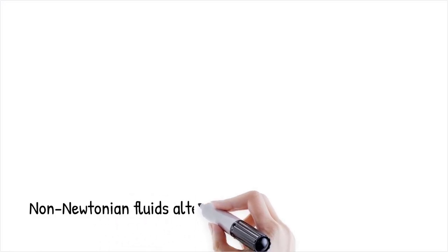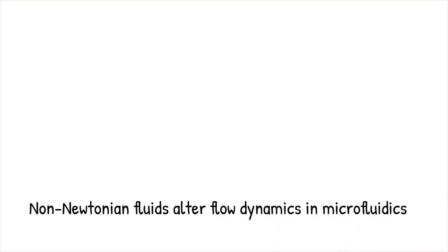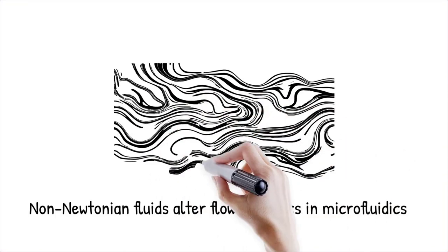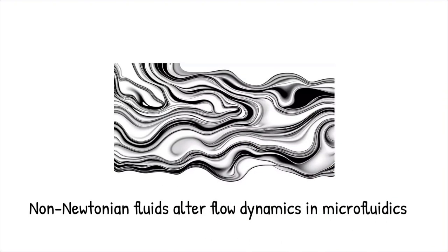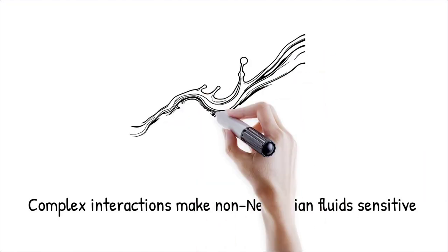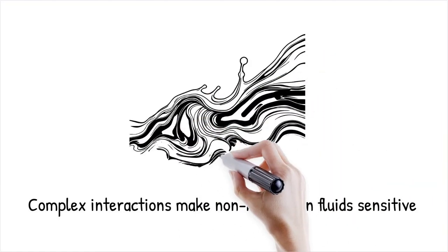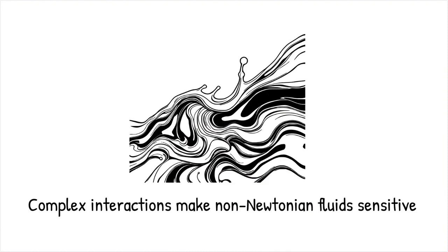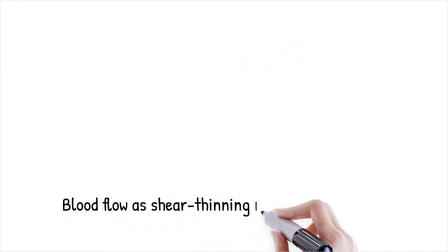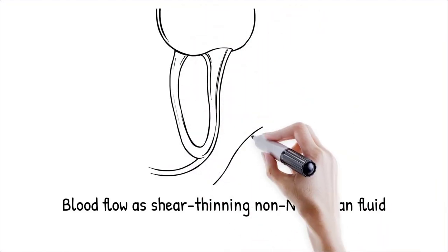Non-Newtonian fluids exhibit shear thinning, shear thickening, or viscoelastic behavior, significantly altering their flow dynamics in microfluidic systems. These properties arise due to complex molecular interactions, making them highly sensitive to flow conditions in confined environments, which is crucial for biomedical diagnostics, drug delivery, and soft-matter physics. Blood, a non-Newtonian fluid, exhibits shear thinning behavior, meaning its viscosity decreases at higher shear rates, allowing it to flow efficiently through narrow capillaries.